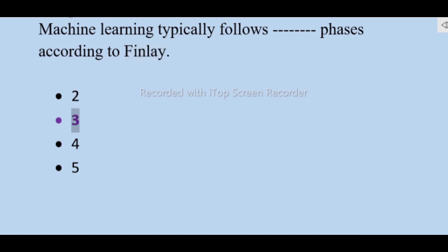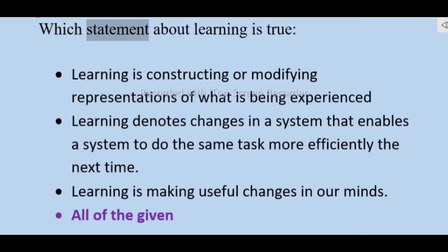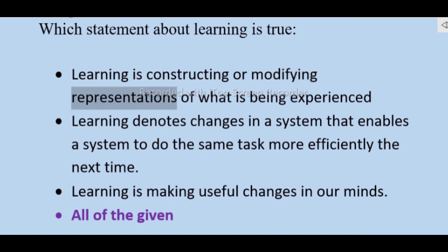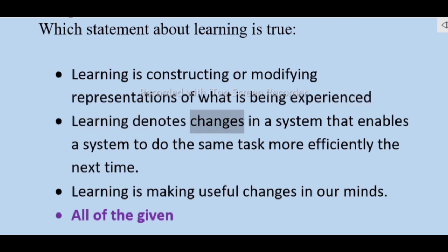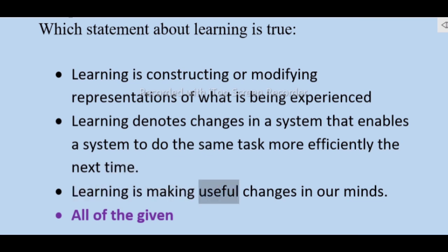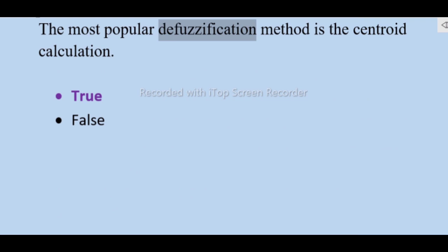Machine learning typically follows how many phases according to Finlay? 2, 3, 4, 5. Which statement about learning is true? Learning is constructing or modifying representations of what is being experienced. Learning denotes changes in a system that enable it to do the same task more efficiently the next time. Learning is making useful changes in our minds — all of the given.